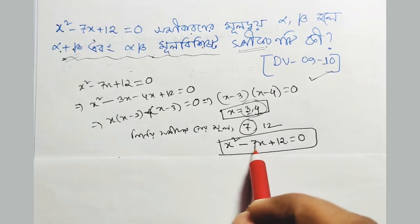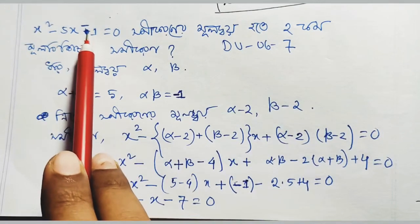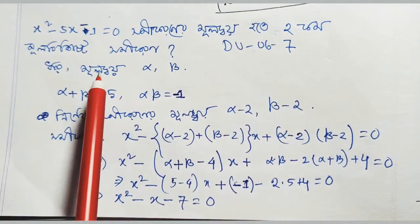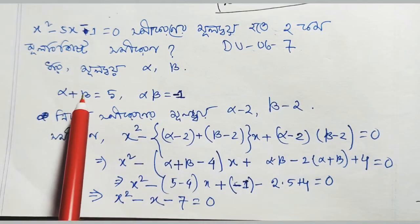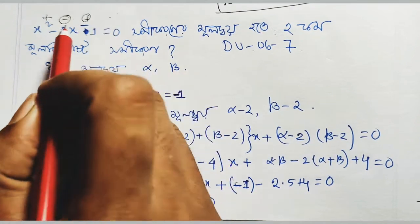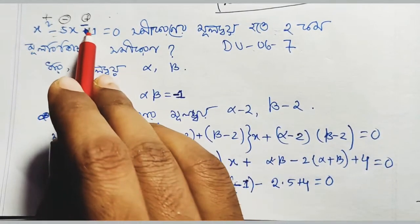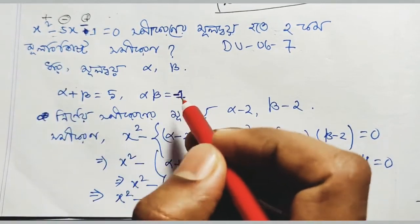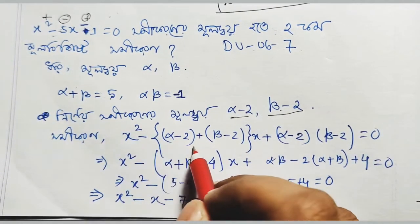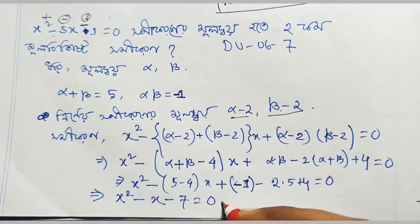Consider another example: x² - 5x - 1 = 0. Here alpha plus beta equals 5. If we need alpha minus 1 and beta minus 1, or alpha plus 2 and beta plus 2, we get new equations like (x - 1) or (x + 2) substituted, giving x² - 3x - 4 = 0.